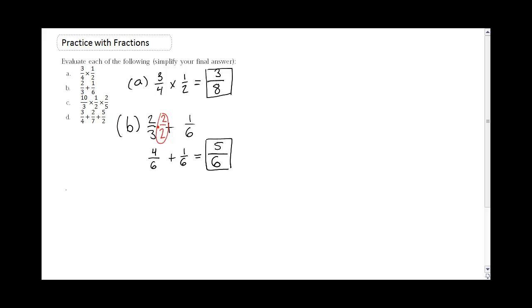Moving on to C. So I have 10 thirds times 1 half times 2 fifths. So remember, if you're multiplying, you just multiply across the top, multiply across the bottom.